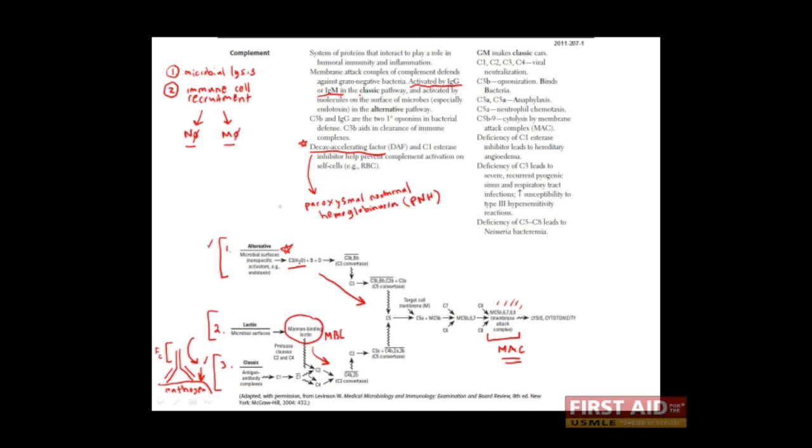So what's one way that we can group all these pathways? There are three of them. But realize that the lectin pathway and the alternative pathway are not dependent on the adaptive system. The classical pathway, on the other hand, depends on antibody. Antibody is what is activating the complement proteins in this case. And this is a major distinction that you should keep in mind.